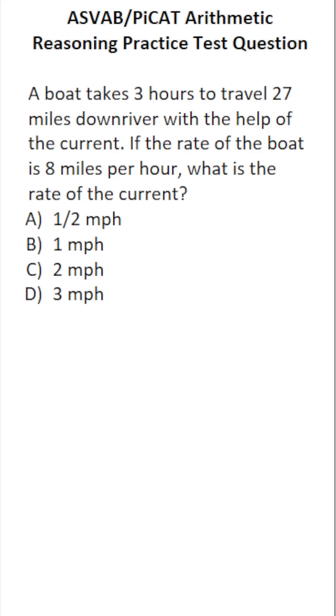This arithmetic reasoning practice test question for the ASVAB and PICAT says: a boat takes three hours to travel 27 miles downriver with the help of the current. If the rate of the boat is eight miles per hour, what is the rate of the current?